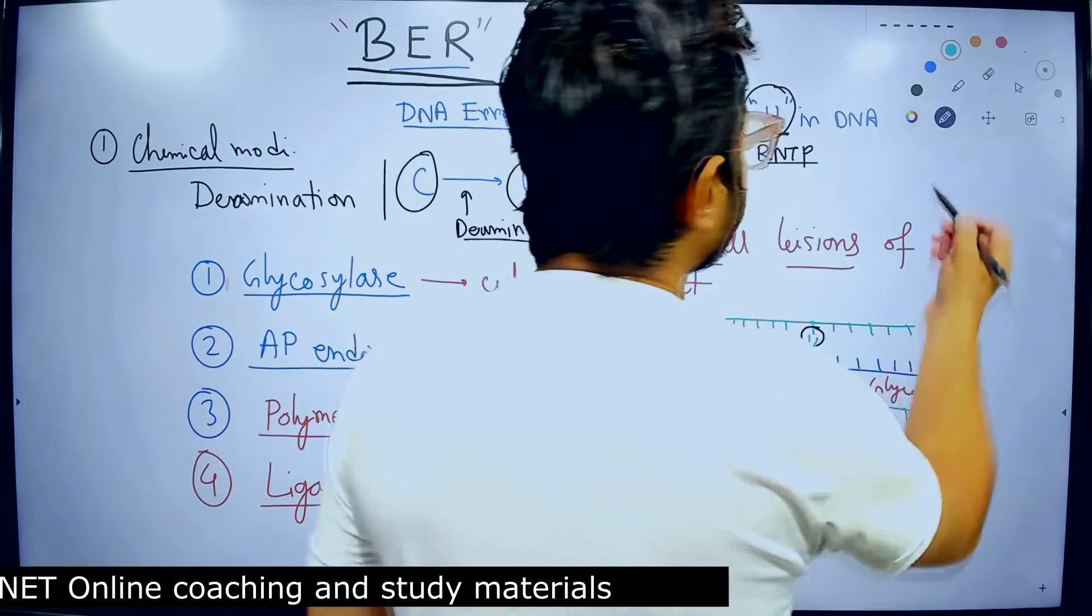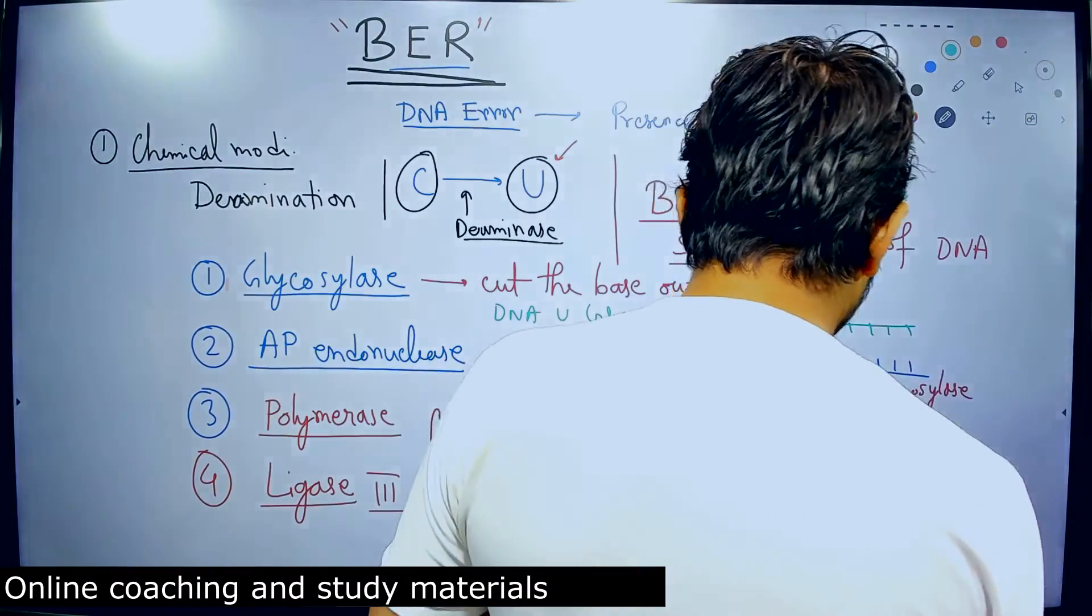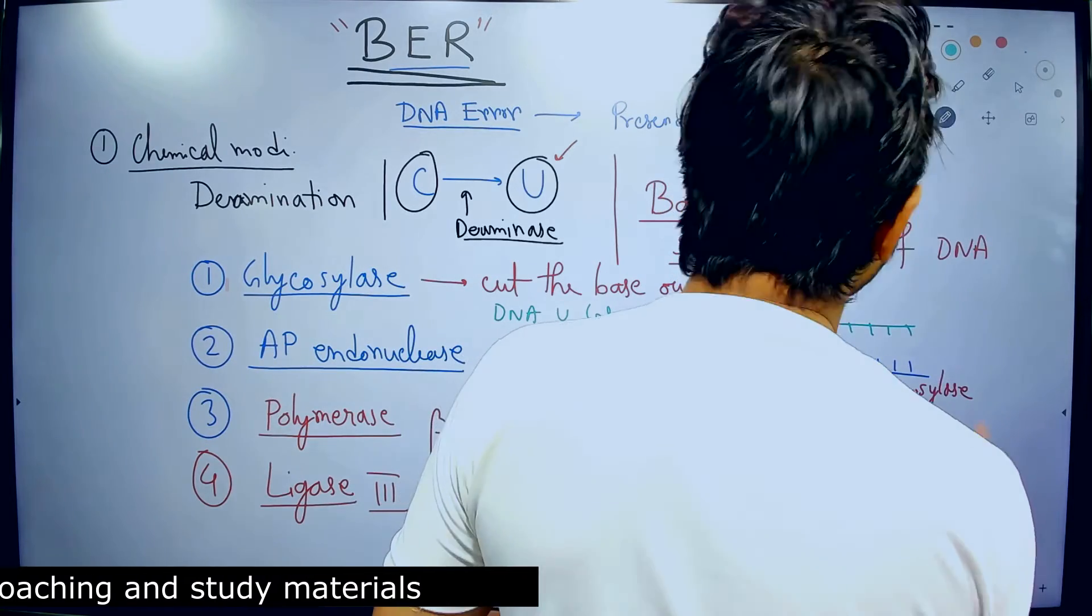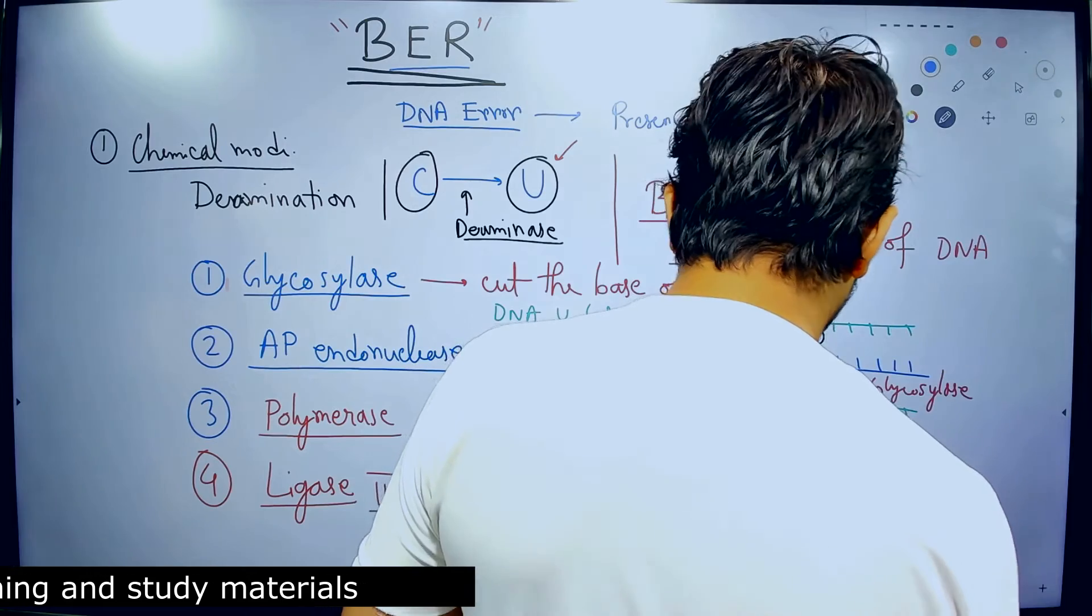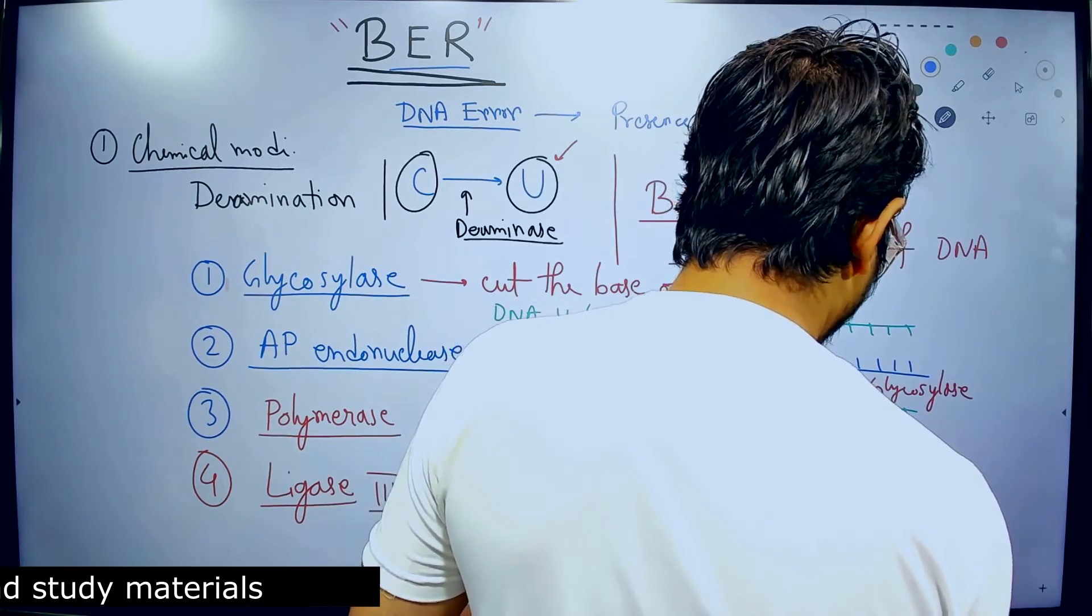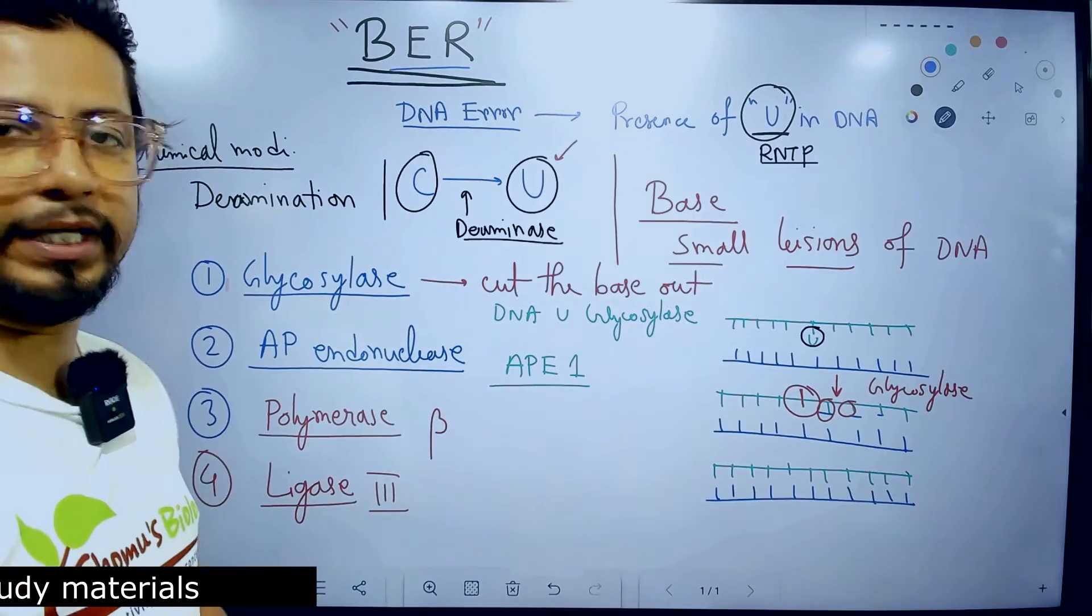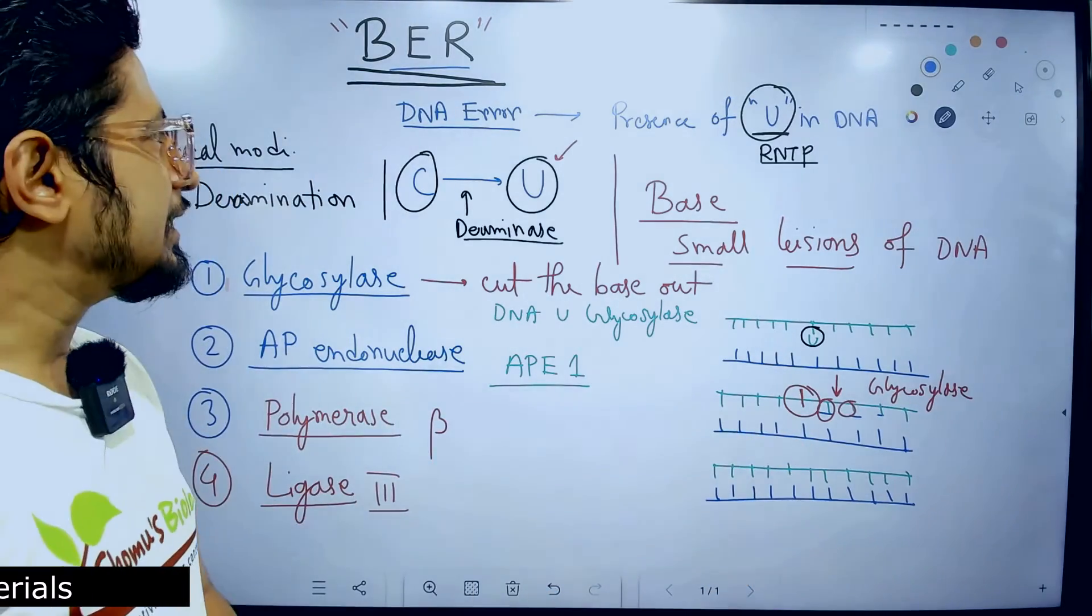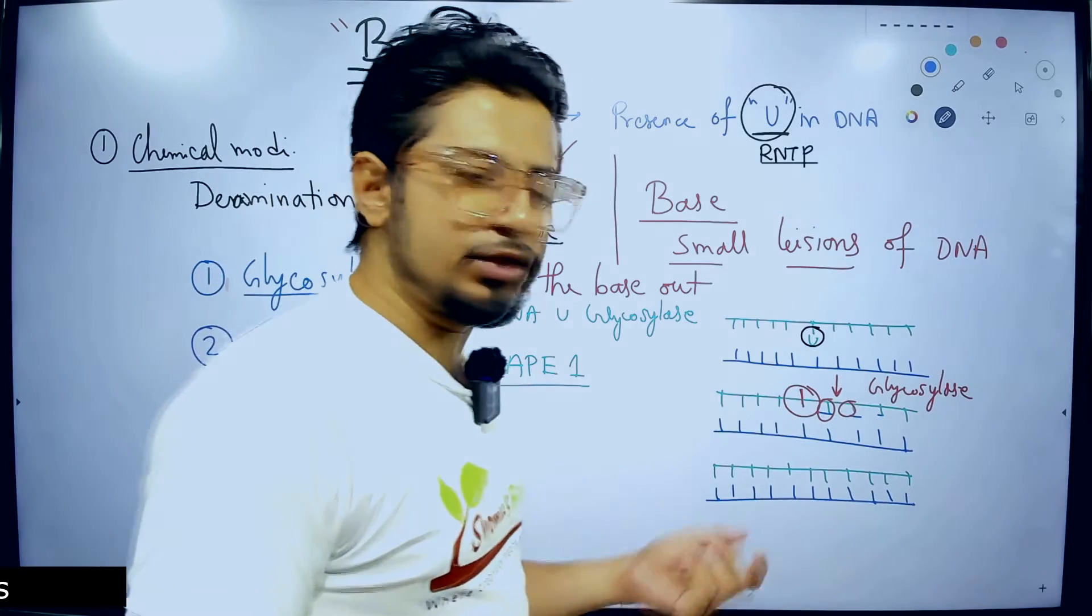And as a result at the end, what we can clearly see is that the process is done and the error is fixed without any problem. So, at the end, we are getting a healthy copy of the DNA without any uracil in it. So, the error is fixed. So this is the process of base excision repair.